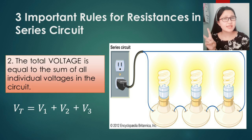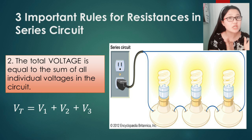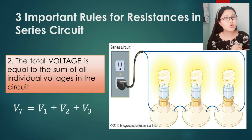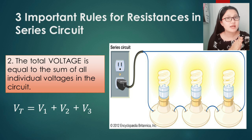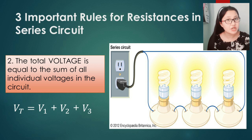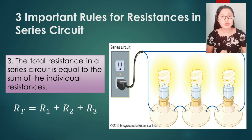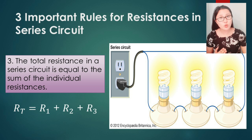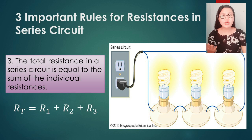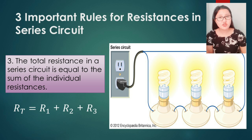For the second rule regarding voltage in a series circuit: the total voltage is equal to the sum of all the individual voltages in the circuit. So if we have three loads, each will have a different voltage, and when we add them all together, it results in the total voltage. So in a series circuit, the electric current is the same throughout, but the voltages are different. For the third rule: the total resistance in a series circuit is equal to the sum of the individual resistances. The formula is RT = R1 + R2 + R3, and so on.